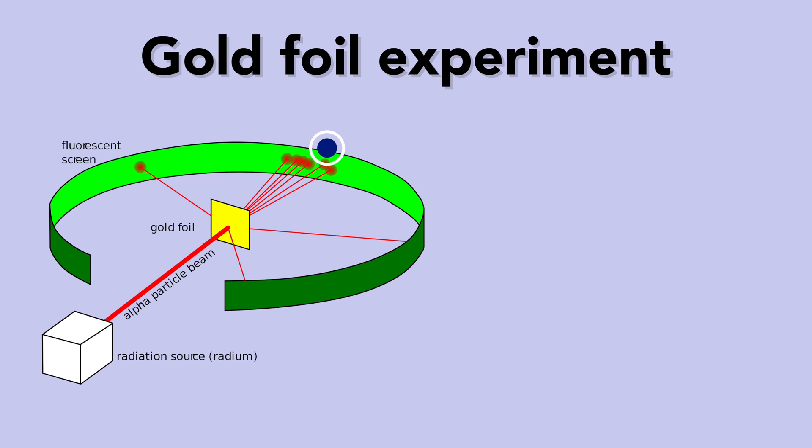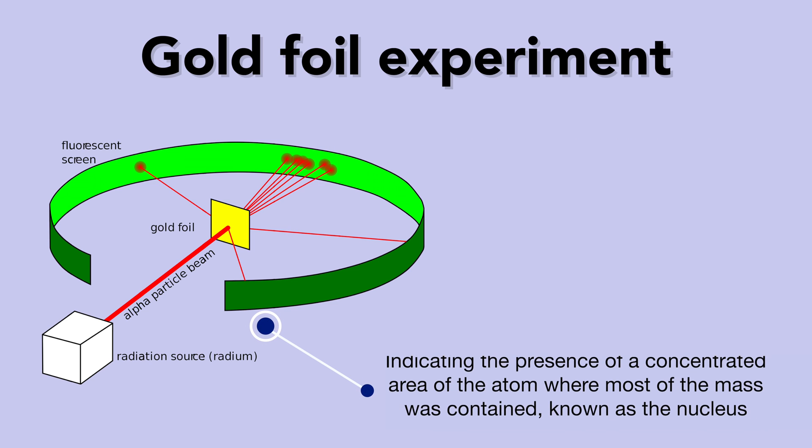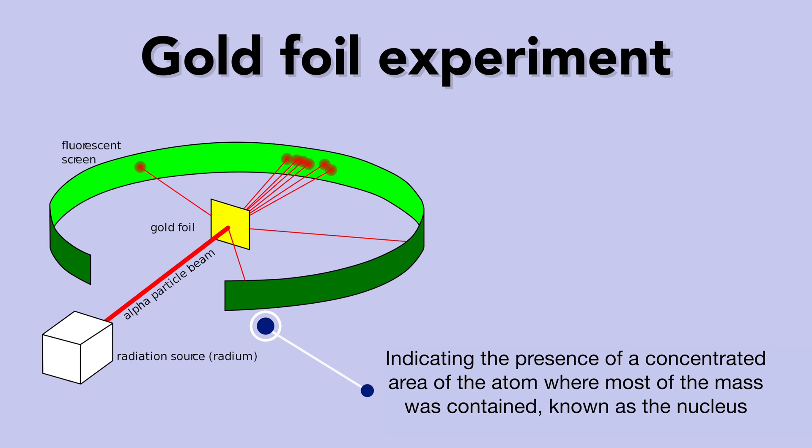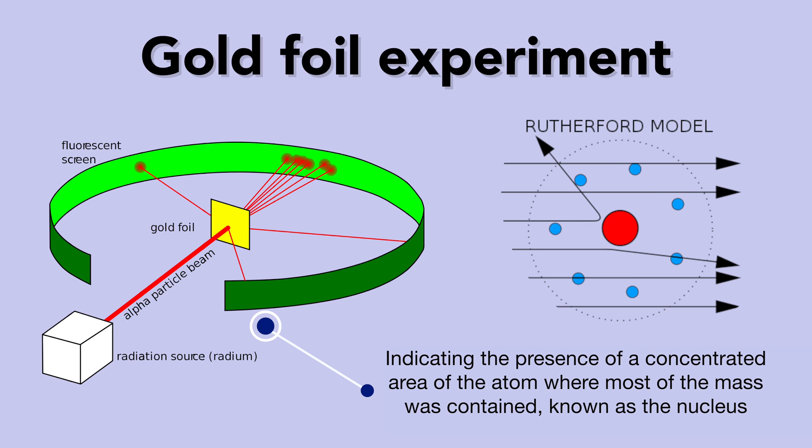The second more important observation was that some of the particles deflected, sometimes almost completely back to the source, indicating the presence of a concentrated area of the atom where most of the mass was contained, known as the nucleus. This contradicted J.J. Thomson's model of the atom.